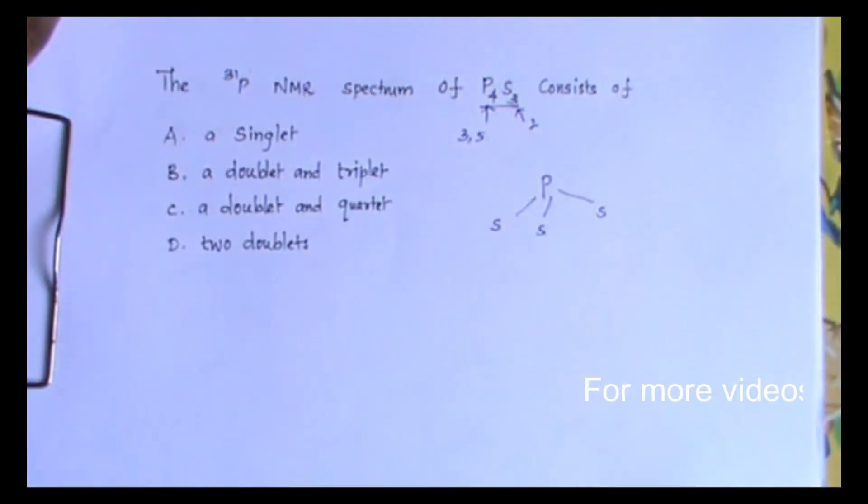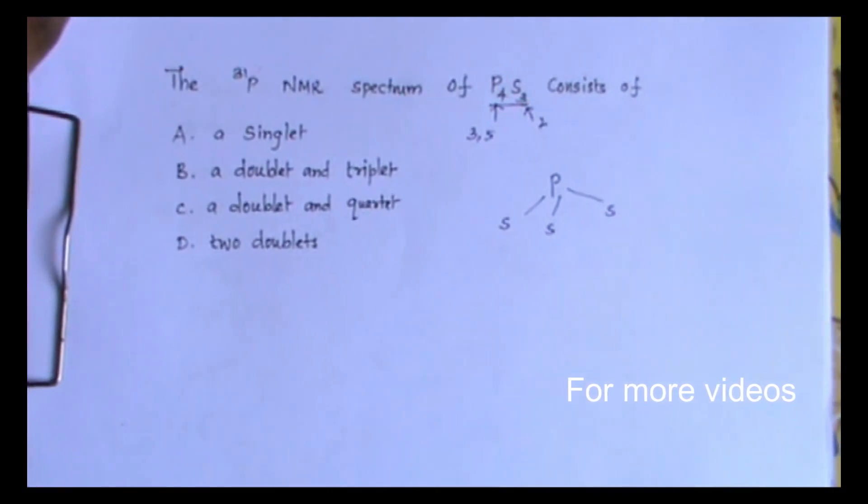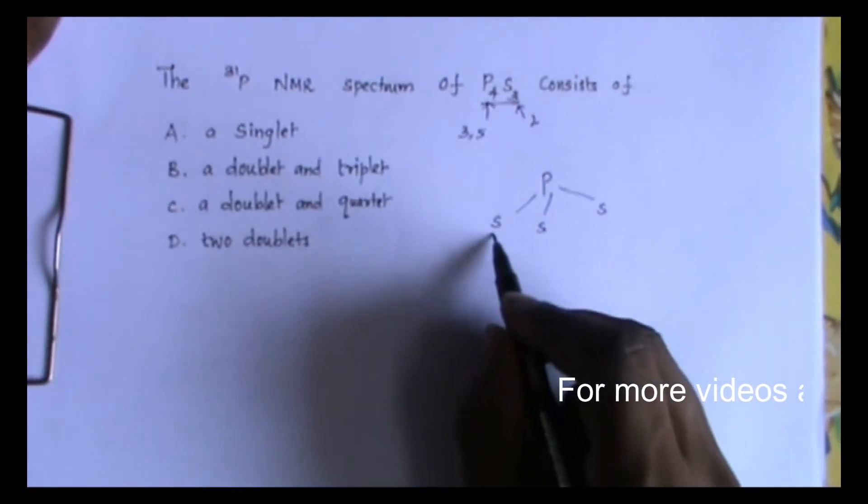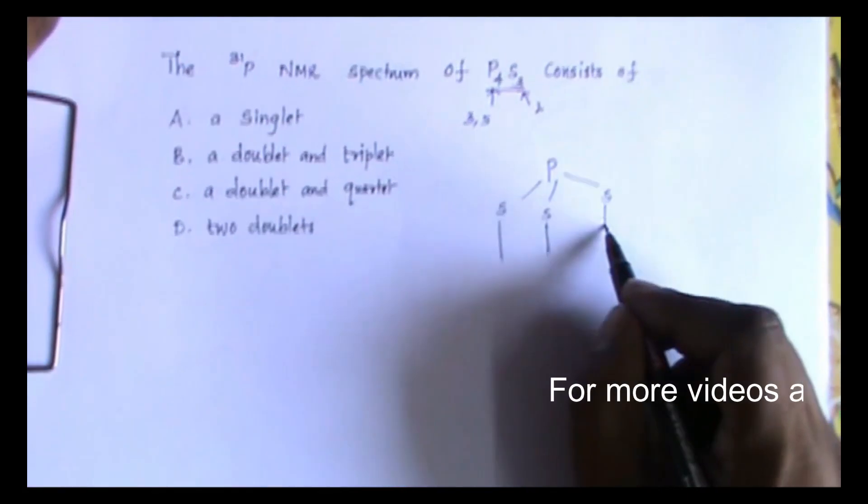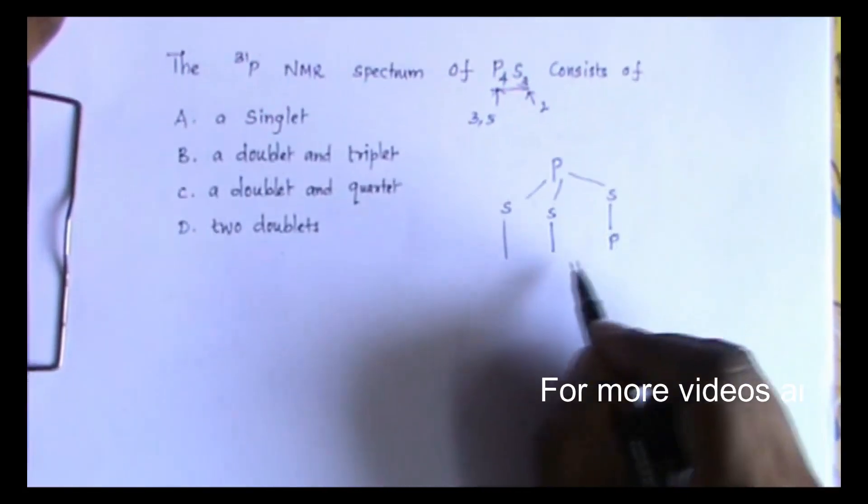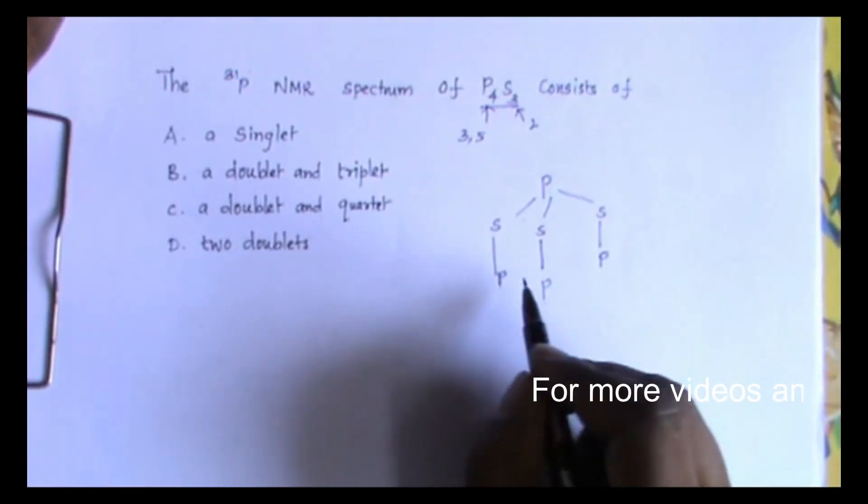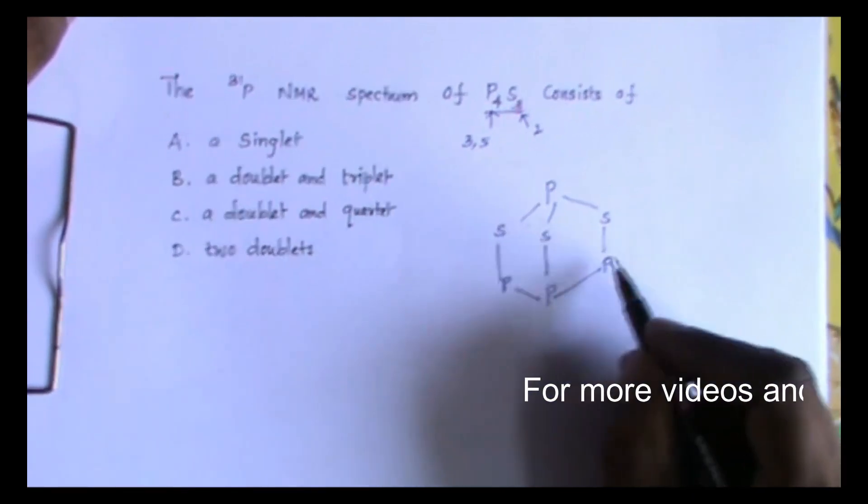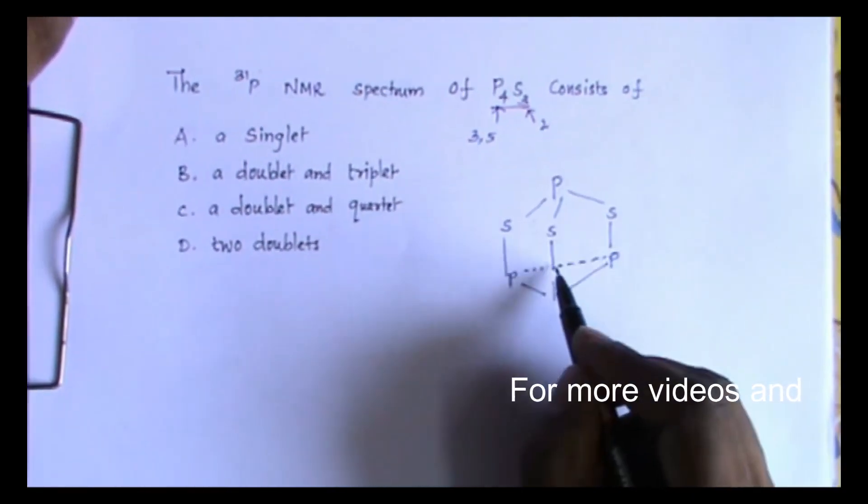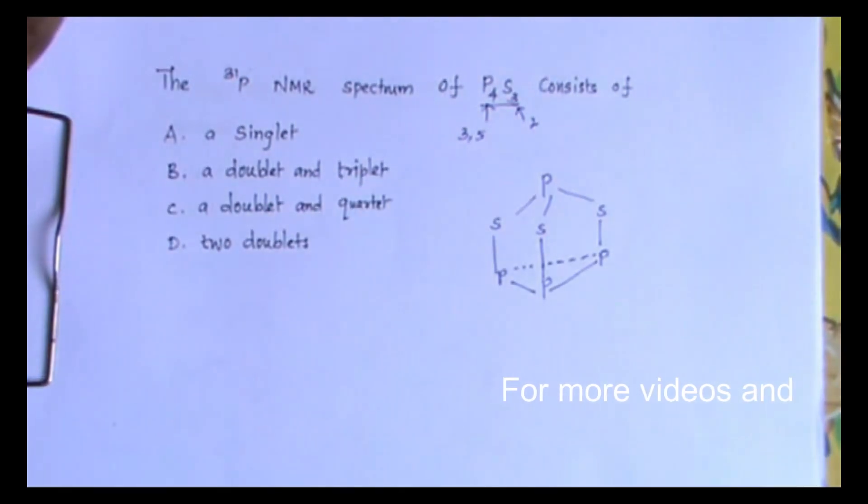I have taken one phosphorus, it is attached with three sulfur atoms. Further, these three sulfur atoms are attached with three phosphorus atoms. They will form a triangle. This is the structure of P4S3.